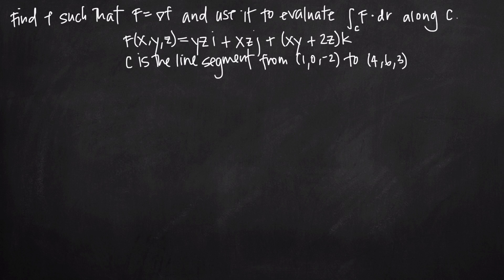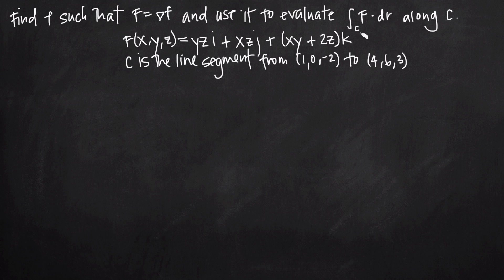In this video, we're going to be talking more about conservative vector fields. With this particular problem, we've been asked to find a function f such that the conservative vector field capital F is equal to the gradient of the function f. And if we can find this function f, we're supposed to use it to evaluate the line integral of the conservative vector field capital F along some curve C.